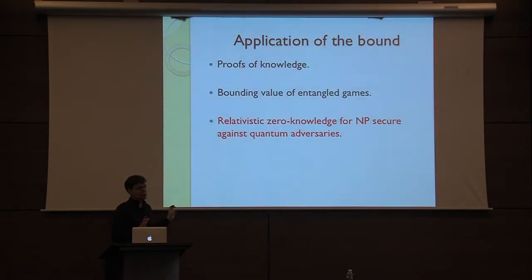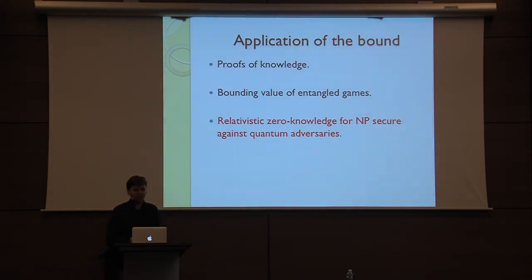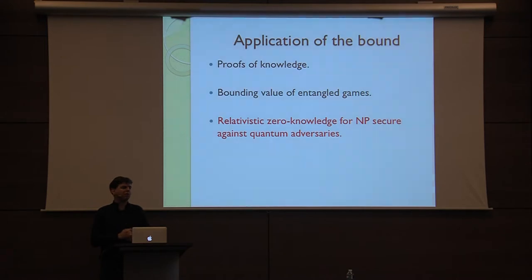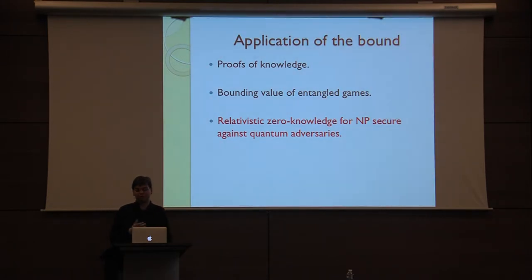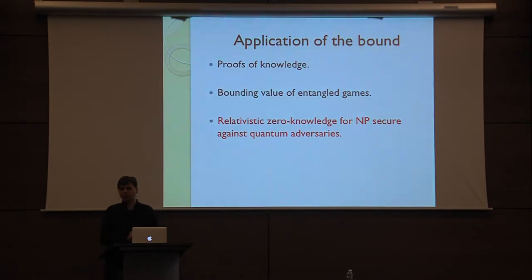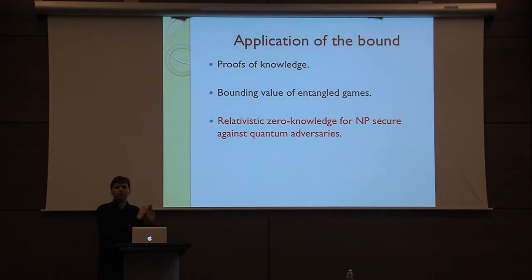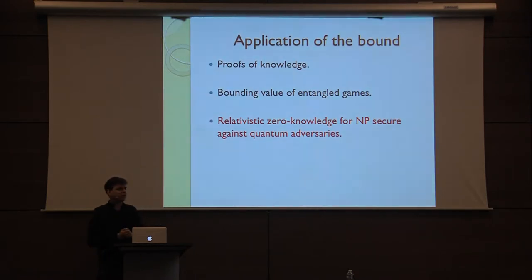It's a very natural question and we hope to use it in several things: for proof of knowledge as in the small example I showed, more generally for bounding the value of entangled games, and the original motivation — relativistic zero knowledge for NP secure against quantum adversaries. Once we had this bound, the rest was actually pretty straightforward, at least for the kind of security we wanted to prove.